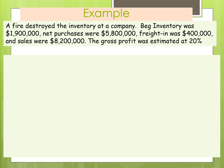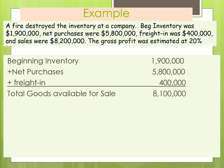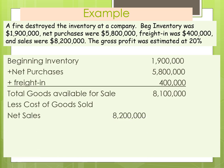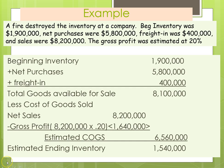A fire destroyed the inventory of a company. They had beginning inventory of $1.9 million, net purchases of $5.8 million, freight in of $400,000, and sales of $8.2 million. Gross profit was estimated at 20%. You start with your beginning inventory, add purchases plus freight, giving you total cost of goods available for sale. Then estimate cost of goods sold by taking net sales and subtracting the estimated gross profit, which gives estimated cost of goods sold and ultimately estimated ending inventory. That concludes part one of this three-part presentation on additional issues for inventory.